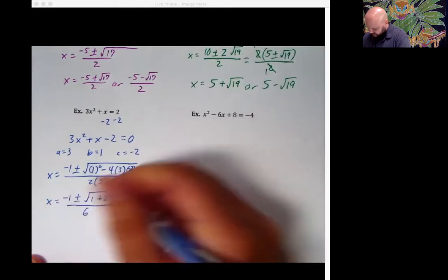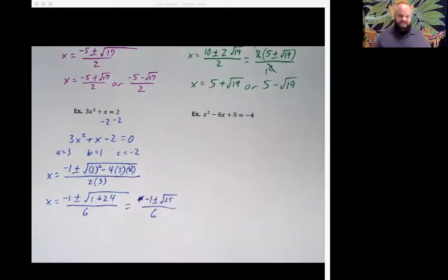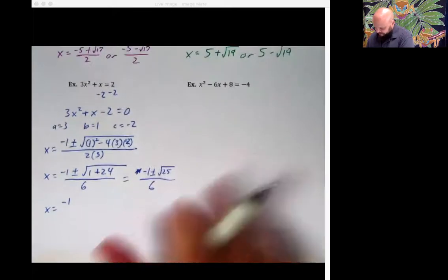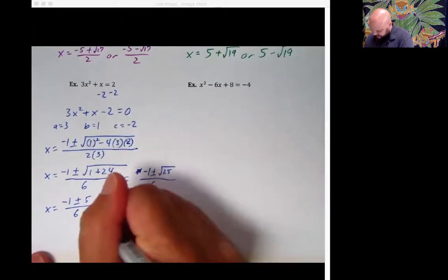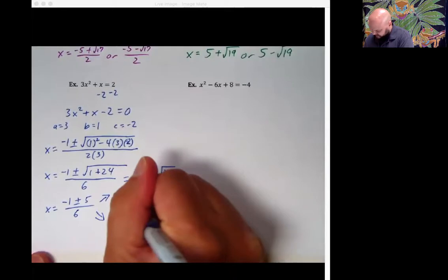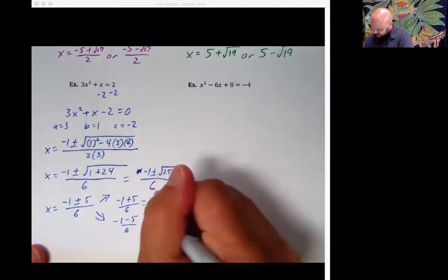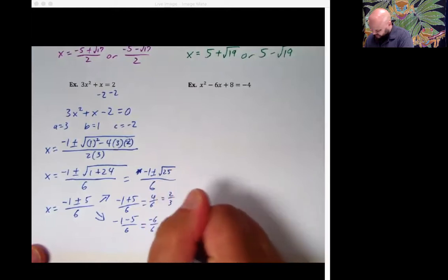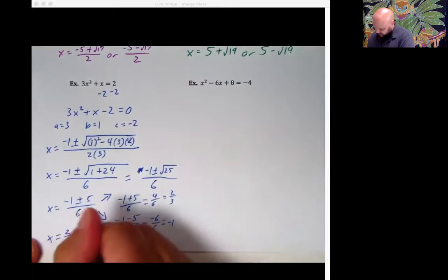That's going to end up being x. Whoa, I don't need the x. X is all the way back there. Negative 1 plus or minus the square root of 25 over 6. And you may notice something, folks, specifically that the square root of 25 is just 5. So this is x equals negative 1, plus or minus 5 over 6. And that is two separate answers. That is negative 1 plus 5 over 6. And negative 1 minus 5 over 6. This is going to end up being 4 sixths, which is 2 thirds. And this is going to end up being negative 6 over 6, negative 1. So x equals 2 thirds or negative 1.